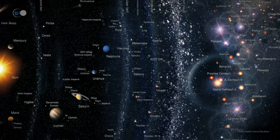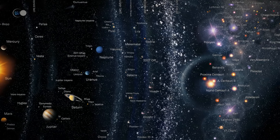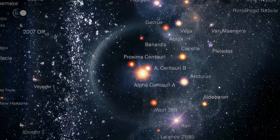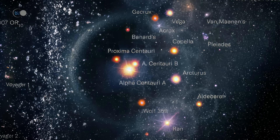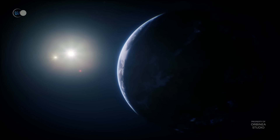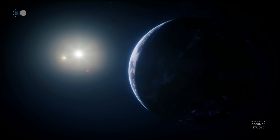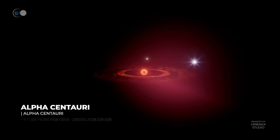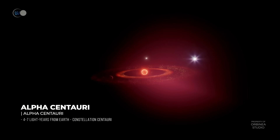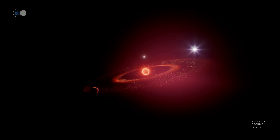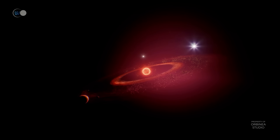Continuing our exploration beyond the Oort Cloud and outside our solar system, we can observe the Alpha Centauri star system, located 4.37 light years from Earth. Alpha Centauri is the closest star and planetary system to our solar system — though this status may change since everything in the universe is in motion, it is likely to retain it for a long time, as our Sun takes 230 million years to circle the Milky Way.